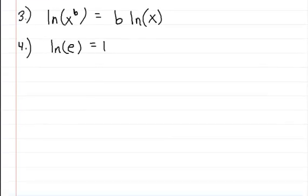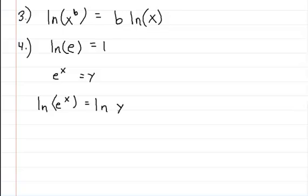With that, let's say for instance that you have e to the x equals y, and you wanted to solve for x. One thing you could do is multiply the natural log to both sides. So it's the natural log of e to the x is equal to the natural log of y.